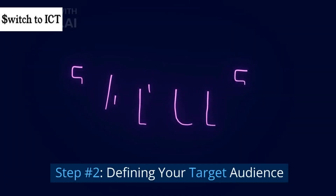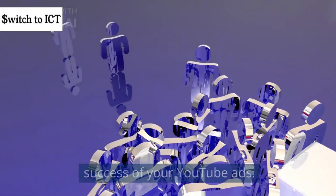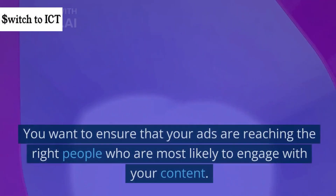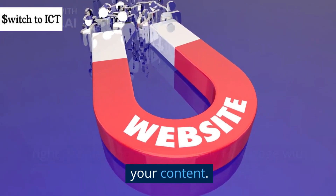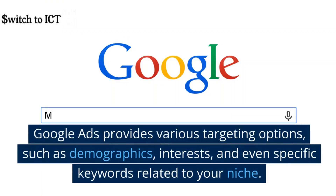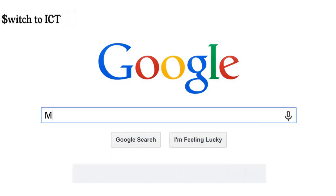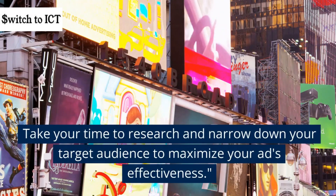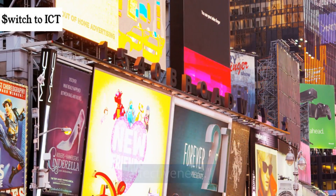Step number two: defining your target audience. Defining your target audience is crucial for the success of your YouTube ads. You want to ensure that your ads are reaching the right people who are most likely to engage with your content. Google Ads provides various targeting options such as demographics, interests, and even specific keywords related to your niche. Take your time to research and narrow down your target audience to maximize your ad's effectiveness.